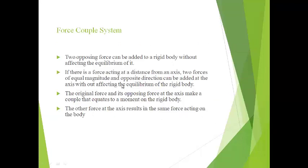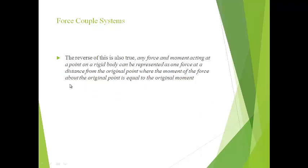Force-couple system: Two opposing forces can be added to a rigid body without affecting its equilibrium. If there is a force acting at a distance from an axis, two forces of equal magnitude and opposite direction can be added at the axis without affecting equilibrium. The original force and its opposing force at the axis make a couple that equates to a moment on the rigid body, while the other force at the axis results in the same force acting on the rigid body. Conversely, any force and moment acting at a point on a rigid body can be represented as one force at a distance from the original point, where the moment of the force about the original point equals the original moment.